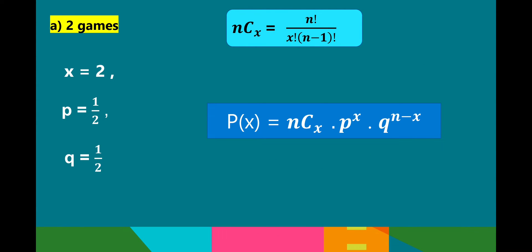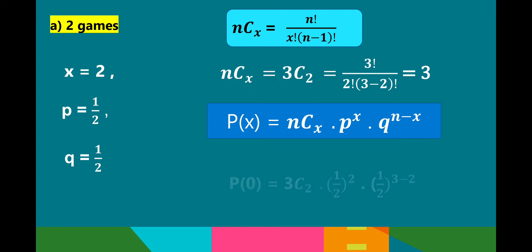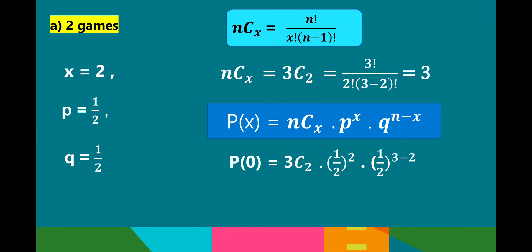For 2 games: x = 2. The combination of 3 at 2 is 3 factorial over 2 factorial times (3 minus 2) factorial, which equals 3. Substituting into the binomial distribution: 3 times (1/2) raised to 2, times (1/2) raised to (3 minus 2). So (1/2) squared is 1/4, and (1/2) raised to 1 is 1/2. Multiplying: 3 times 1/4 times 1/2 equals 3 over 8. Therefore, the probability for 2 games is 3 over 8.